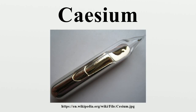Cesium is an alkali metal and has physical and chemical properties similar to those of rubidium and potassium. The metal is extremely reactive and pyrophoric, reacting with water even at minus 116 degrees Celsius. It is the least electronegative element, and has only one stable isotope, cesium-133.